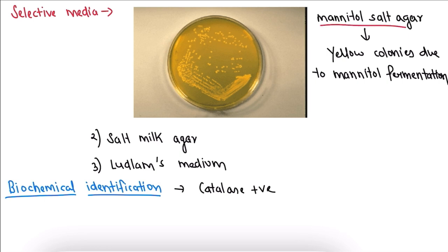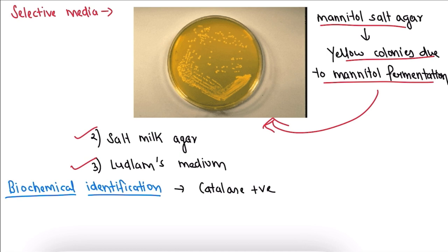For selective media, remember three: first is mannitol salt agar — yellow colonies due to mannitol fermentation; second is salt milk agar; third is Ludlam's medium. In biochemical identification, Staph. aureus is catalase positive.